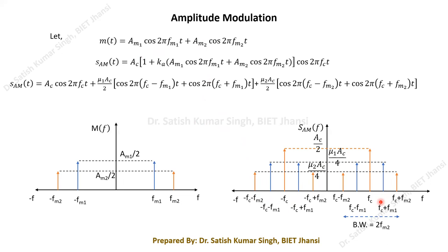For the two-tone message signal, the bandwidth is fm2 − fm1 (maximum minus minimum frequency). For the modulated signal, the maximum frequency component is fc + fm2 and the minimum is fc − fm2, so the bandwidth is (fc + fm2) − (fc − fm2) = 2·fm2.